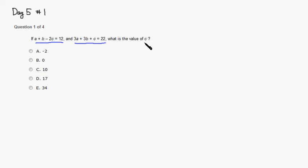Then we're looking for the value of c. So we only have two equations and we have three unknowns, which might not be a good news, but in this case, it's actually okay.